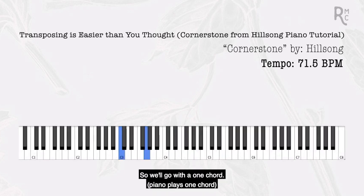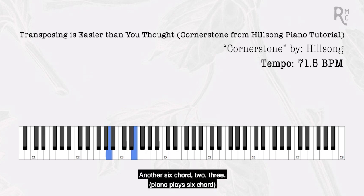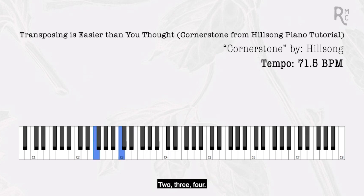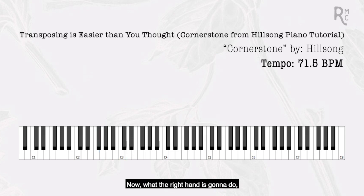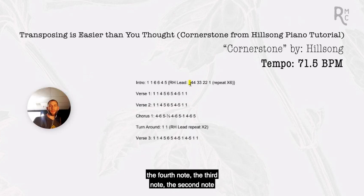Playing through the left hand: one chord held for four counts, another one chord for four counts, then a six chord, another six, then a four chord, a five chord, and we jump into the verse. The right hand plays a cool lead line using the fourth, third, second, and first notes of the C major scale.